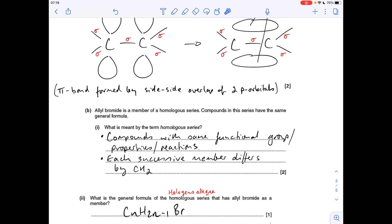Next part, what's the general formula of the homologous series that allyl bromide is a member of? So it's a halogenoalkene. So all I would do is just look at how many carbons, hydrogens, and there's a bromine in there as well. So it was CNH2N-1Br.